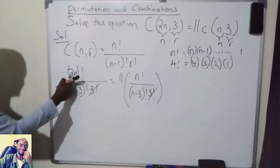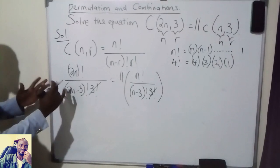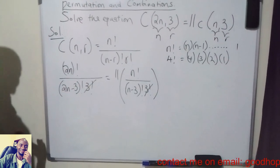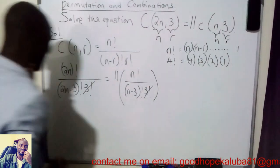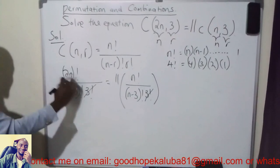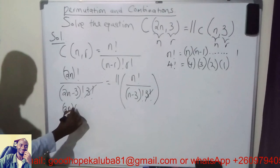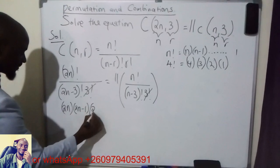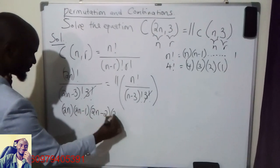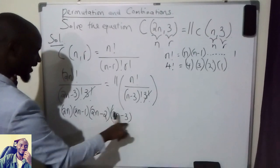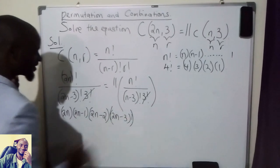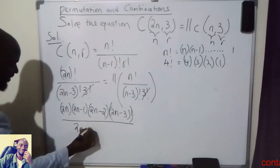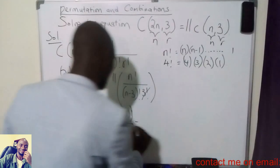So 2n factorial would be equal to 2n multiplied by (2n minus 1), then (2n minus 2), then (2n minus 3), and so on in descending order. I'm going to apply the definition of a factorial, so this would be 2n multiplied by (2n minus 1), then (2n minus 2), then (2n minus 3) factorial in the denominator — so I can end there and put factorial. I'm dividing by (2n minus 3) factorial. This is equal to 11.